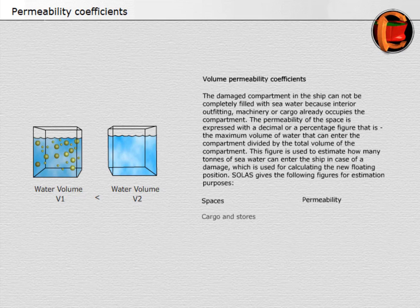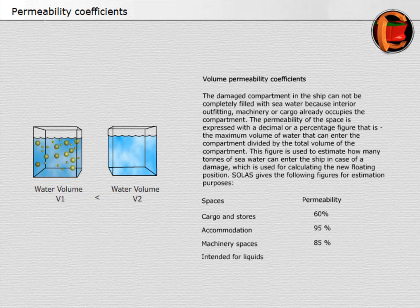SOLAS gives the following figures for estimation purposes: cargo and stores — 60% permeability; accommodation — 95% permeability; machinery spaces — 85% permeability; spaces intended for liquids — 0% or 95% permeability, whichever results in a more severe requirement.